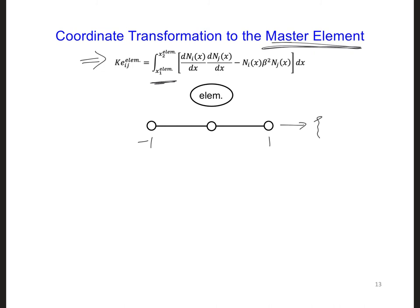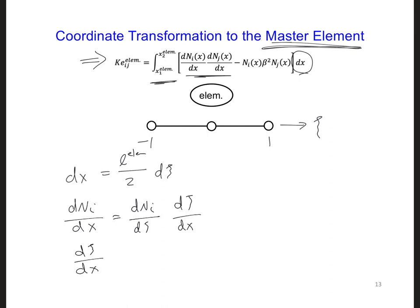And to perform the coordinate transformation, we can use the same expressions that we derived earlier for linear elements. So here, for dx, we said that dx is L, the length of the element, divided by 2, dpsi. Dni, so these terms right here, dx will be dni/dpsi, dpsi/dx. And we had said earlier that dpsi/dx is equal to 2 over the length of the element.